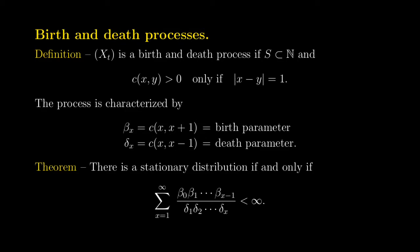The reason why we call these processes birth and death processes is because the dynamics are characterized by things that look like birth or death — you have one more or one less individual in the system, if you think of X_T as keeping track of the number of individuals. Not surprisingly, these processes are important in biology, where X_T keeps track of the number of individuals in a population. But in fact, we already saw some of these processes when we looked at queuing systems, where X_T represents the number of customers in the system.